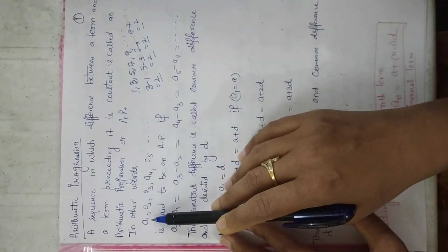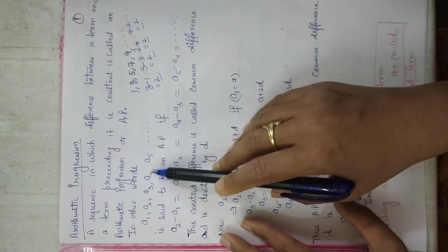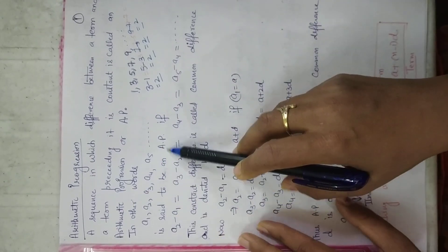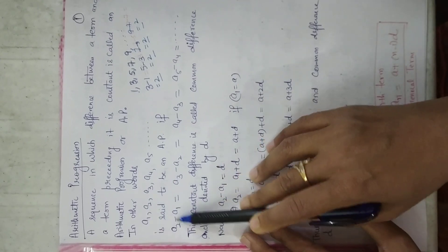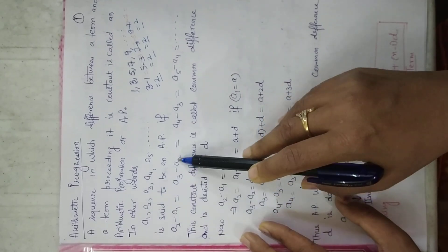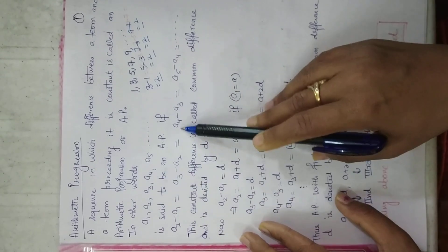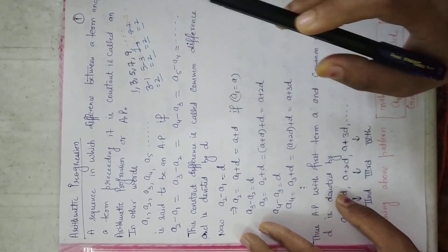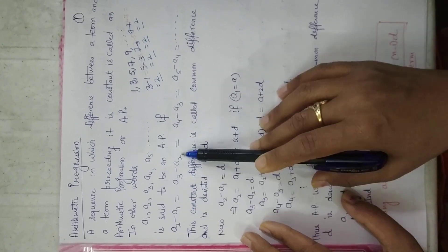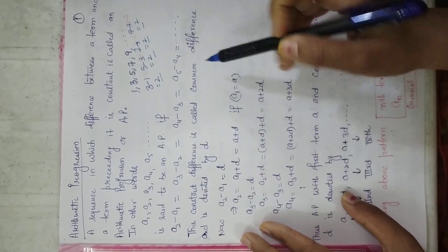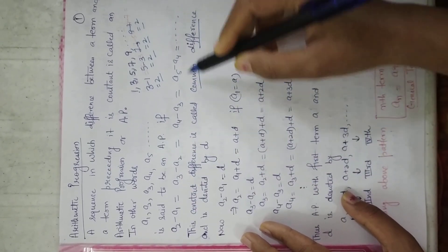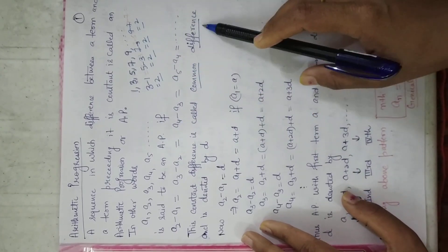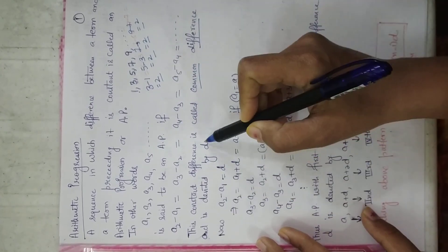In other words, if you have the sequence a1, a2, a3, a4, a5, then this is said to be an AP if a2 minus a1 is the same as a3 minus a2, the same as a4 minus a3, the same as a5 minus a4, and so on. This difference, which is a constant, is called common difference, and it is denoted by small d.